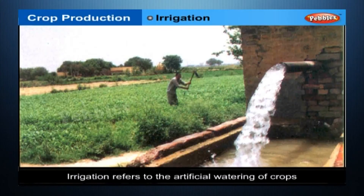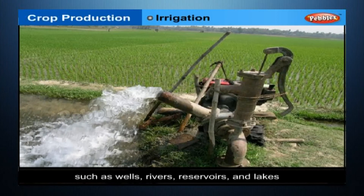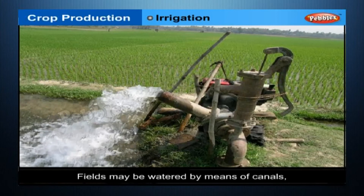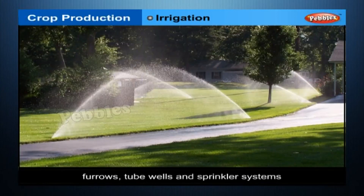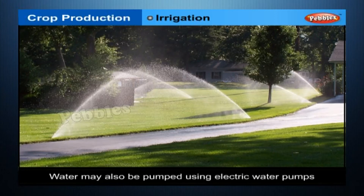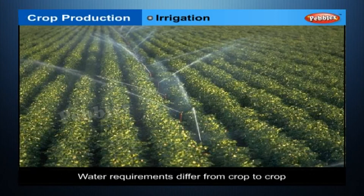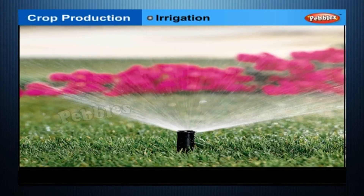Irrigation: irrigation refers to the artificial watering of crops. Water for irrigation is obtained from sources such as wells, rivers, reservoirs and lakes. Fields may be watered by means of canals, furrows, tube wells and sprinkler systems. Water may also be pumped using electric water pumps. Water requirements differ from crop to crop. Crops such as paddy need a constant supply of water, while wheat requires water at regular intervals during its growth.